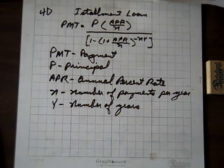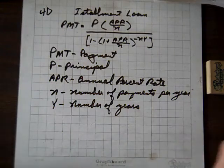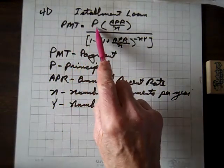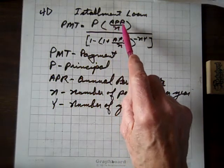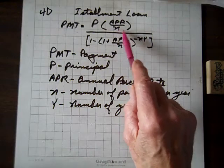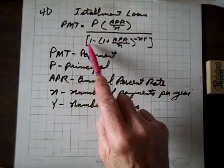So now we're doing Unit 4D on installment loans, and the formula we need is right here. It's PMT for payment, P for principal, times the quotient of the rate over the number of payments per year, and all of that divided by, in brackets...